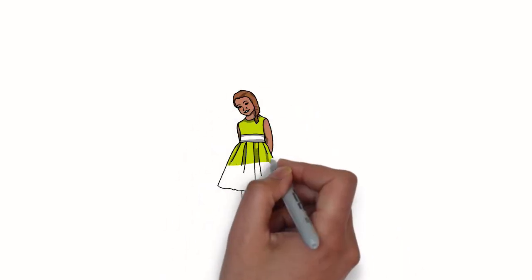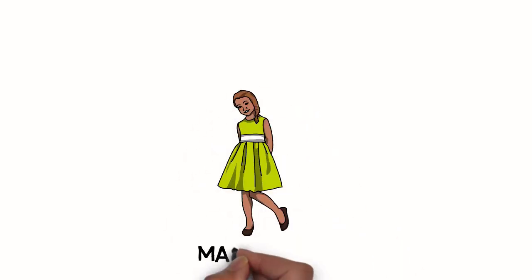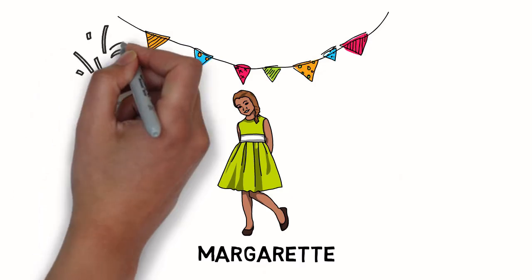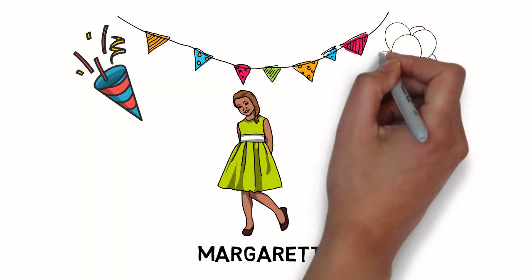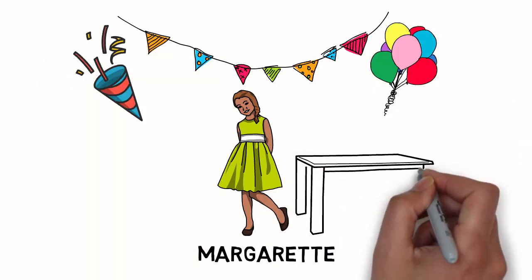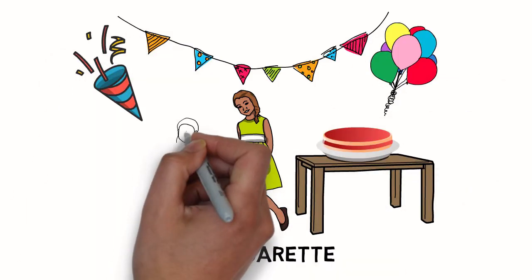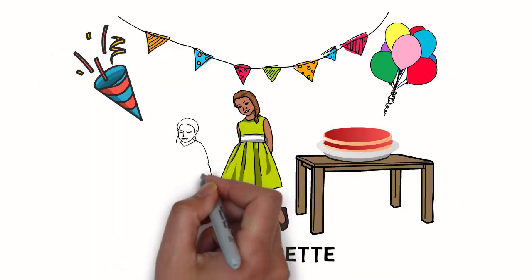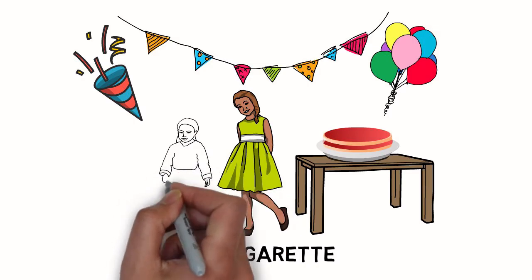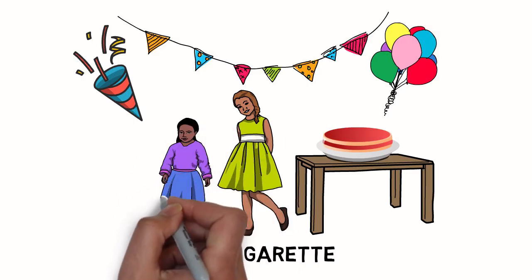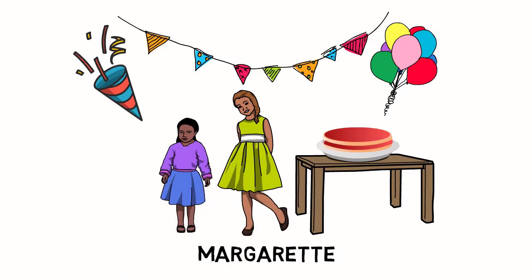I want you to meet this little girl. She is Margaret. She celebrated her birthday yesterday. Her mother bought her a cake. Let us find out what part of the whole cake she gave to her sister.